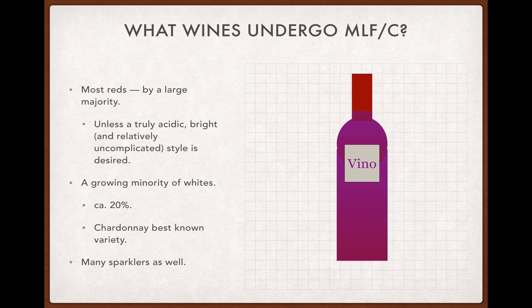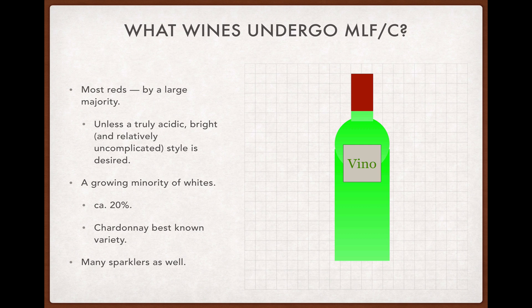What wines go through malo? A large majority of all quality red wines made for commercial consumption do, with the only exceptions being cases where a truly acidic, bright, and relatively uncomplicated style is what the winemaker is looking for. Some estimates suggest that around 20% of whites go through malo, and that number seems to be rising. The flavors and aromas produced by malo are generally thought to play better with certain white varieties than others, and Chardonnay is probably the variety best known for having an affinity for this process, while other whites like Chenin Blanc and Riesling are almost never put through it.